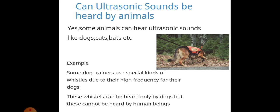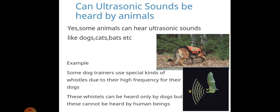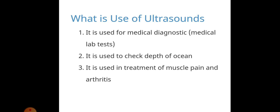Ultrasonic sound is heard by some animals. Bats also produce ultrasonic sound. Bats produce sound with frequency more than 20,000 hertz, and they use it to locate prey or any obstacle. So, this ultrasonic sound is used by animals.